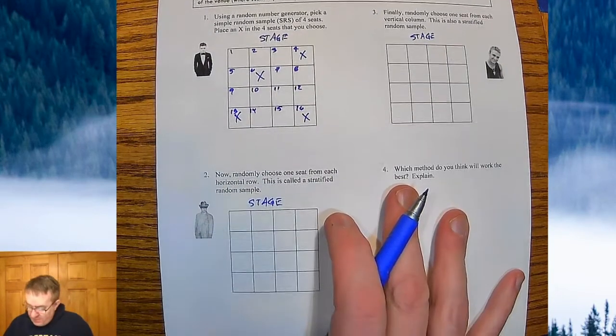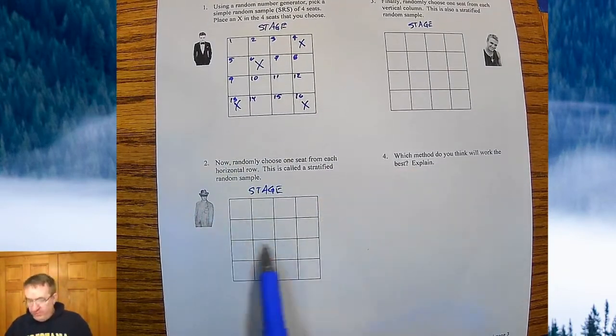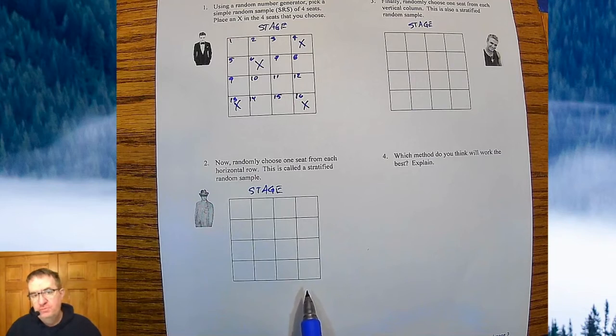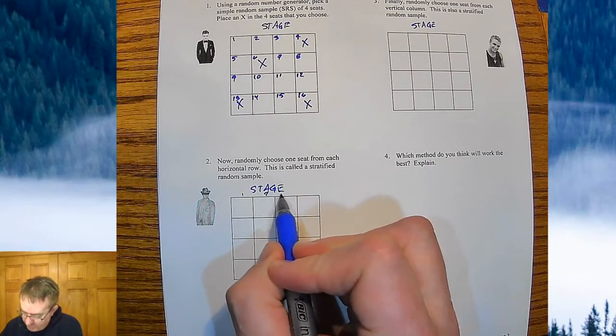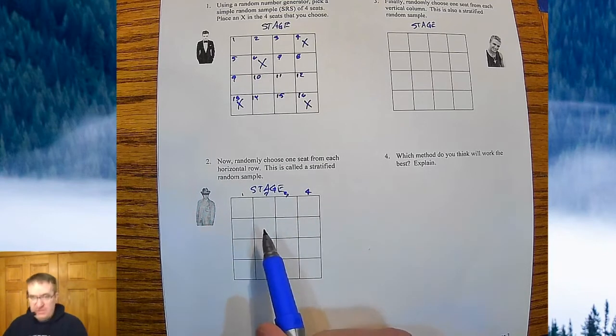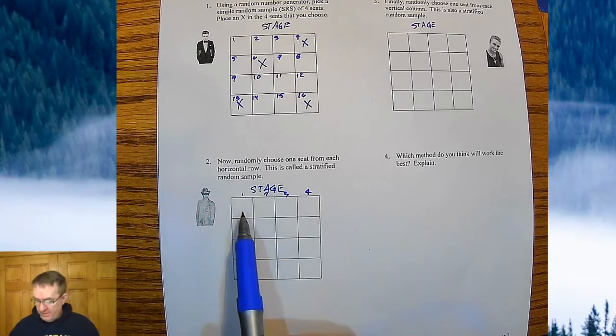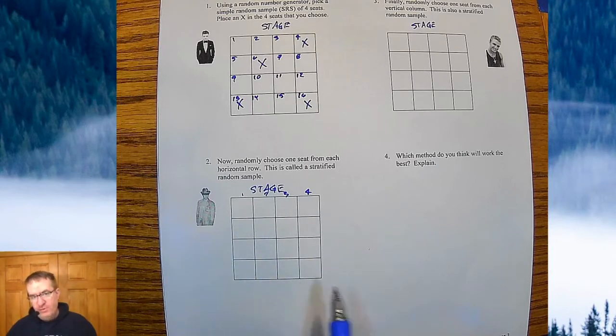So now we're saying, okay, well, maybe there's a different way to do it. Let's choose one from each row. Okay. So again, we're going to just call it, we're going to go one through four. So one, two, three, four. And I'm going to do this four times. I'm going to pick four numbers from one through four, four times. One for the first row, second, third, fourth row.